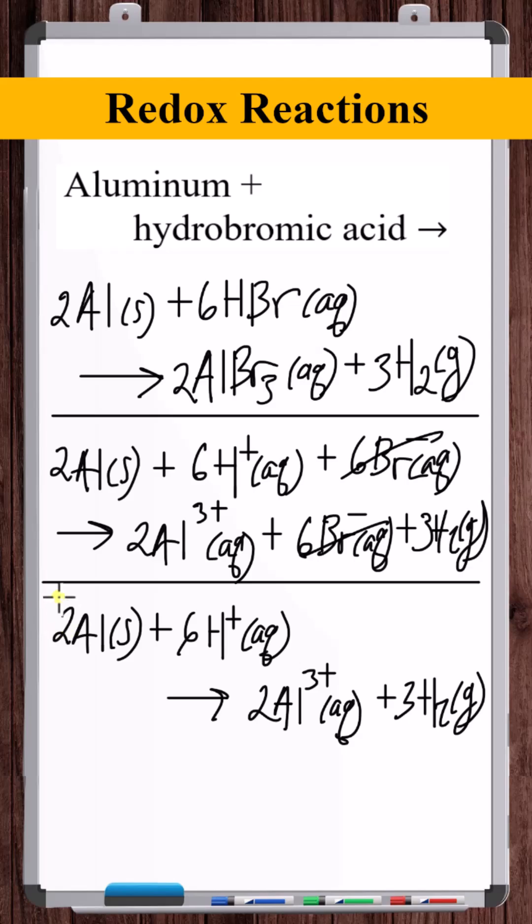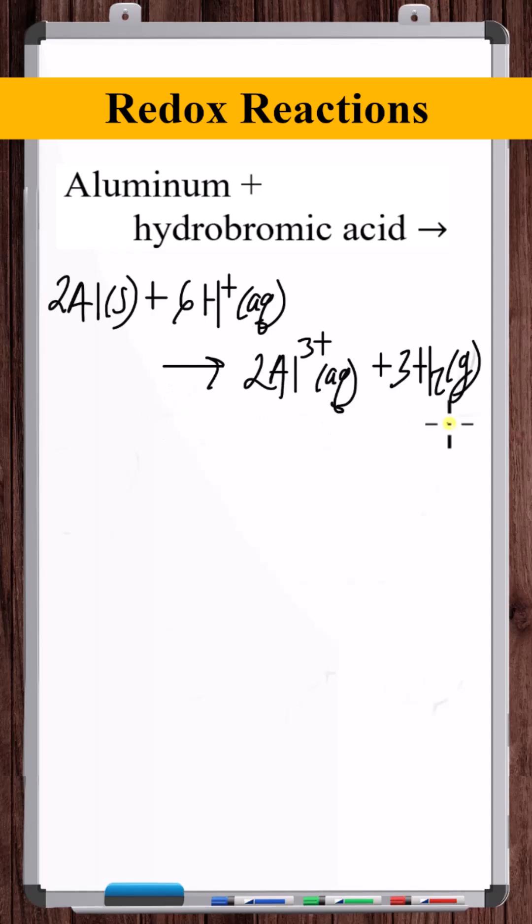Now this is a redox reaction. So we can also write the half reactions. So focusing on the net ionic equation, let's first assign oxidation numbers. So elemental forms, zero, these monoatomic ions, just whatever the charge is.